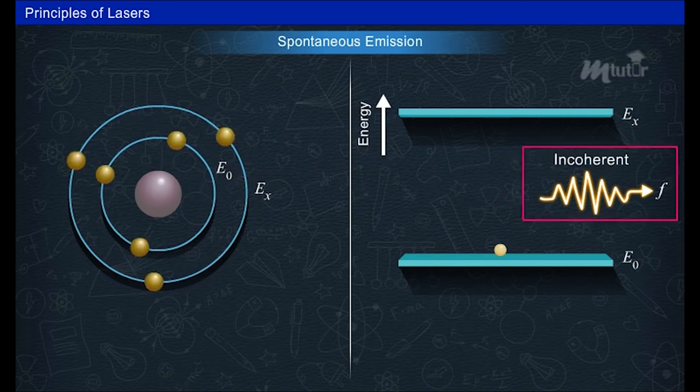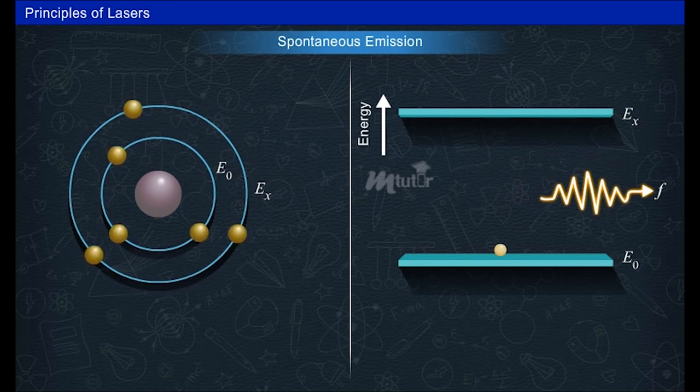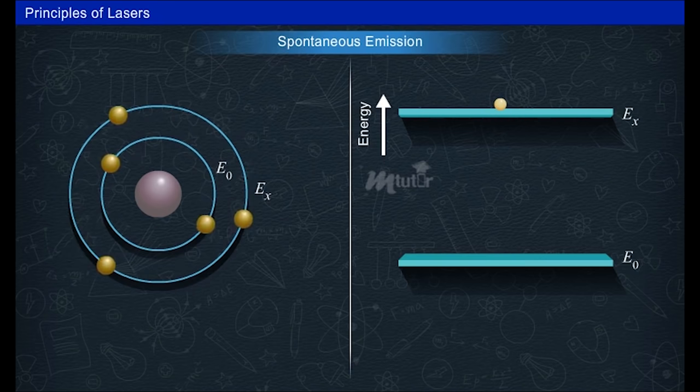Thus the electrons in the excited atoms are released on their own from their higher energy state to the ground state, emitting photons. This is called spontaneous emission. The mean life or lifetime of the excited atom is the time for which it stays in that state.